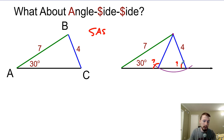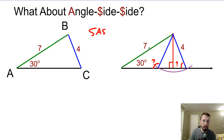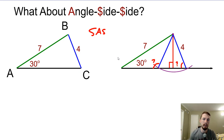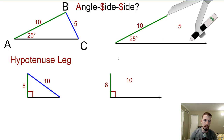So if we have angle-side-side and the angle's not included in between the sides, then it's ambiguous — we're not sure, it's like a 50-50 shot whether or not it's going to be congruent, because it could be the obtuse or the acute one. The only time it does work is when it's directly halfway in between these two, which would be when we have a right angle. And then we really are given a leg and the hypotenuse, which is why we call it the hypotenuse-leg theorem. It's the only time you're allowed to have an angle and two sides where the angle's not between the two sides.